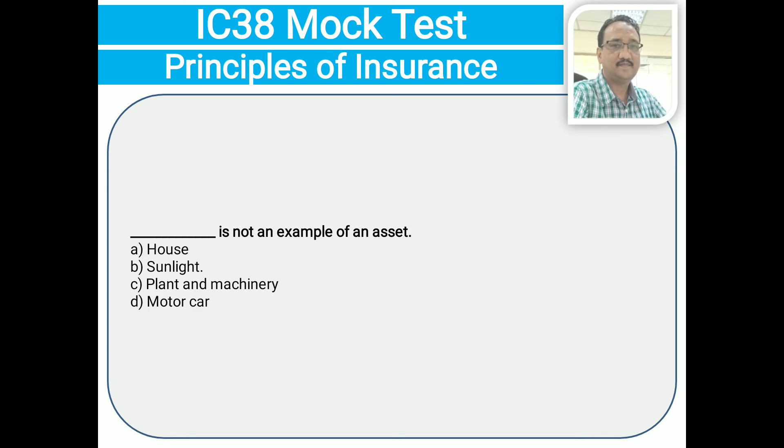Blank is not an example of an asset — house; sunlight; plant and machinery; motor car. The correct answer is B: sunlight.